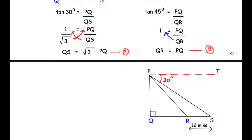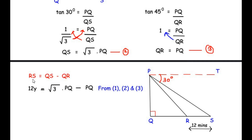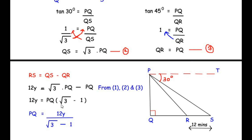From equation 3, PQ = QR, so distance QR = 12y / (√3 − 1). To find the time taken by the car to travel from R to Q, we use time = distance / speed. Time = QR / y = [12y / (√3 − 1)] / y = 12 / (√3 − 1). We cannot leave a square root in the denominator, so we rationalize by multiplying numerator and denominator by (√3 + 1).